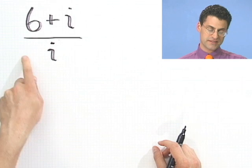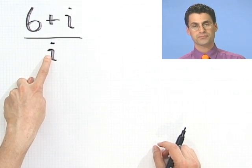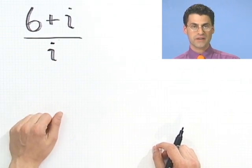OK, well, what can you do here? If you multiply top and bottom by the conjugate, you can think of this as actually 0 plus i. So you'd want to multiply top and bottom by 0 minus i. That would be the conjugate.